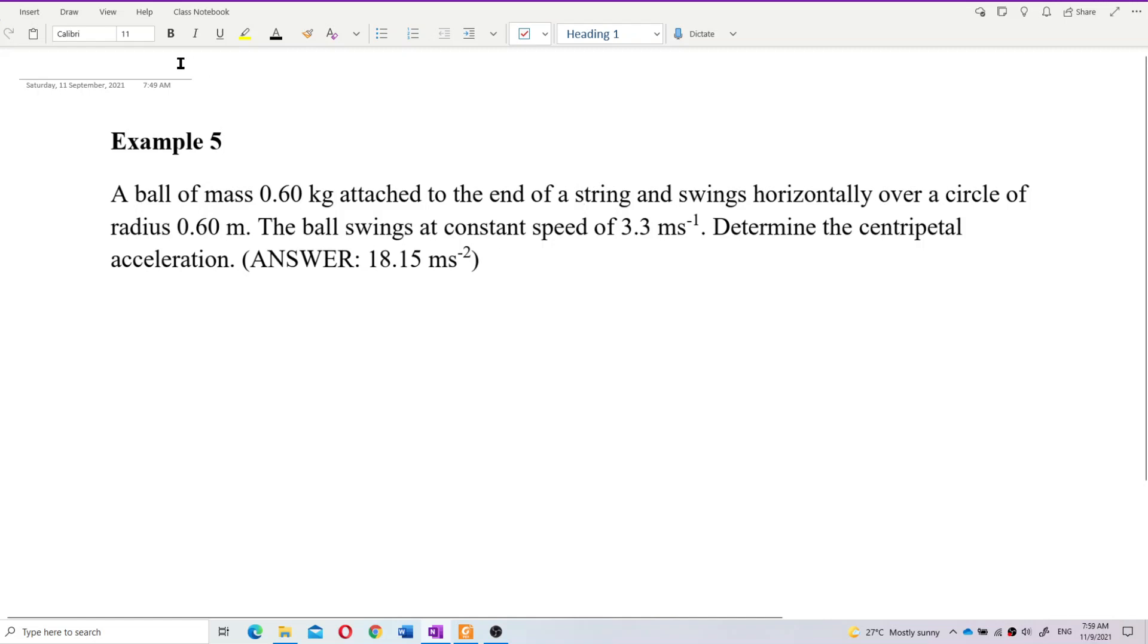So what is given? We have the mass of the ball, the radius of the circle, and the ball swings with this speed. You see the meter unit, so it belongs to linear speed - the linear velocity, not the angular speed or angular velocity.